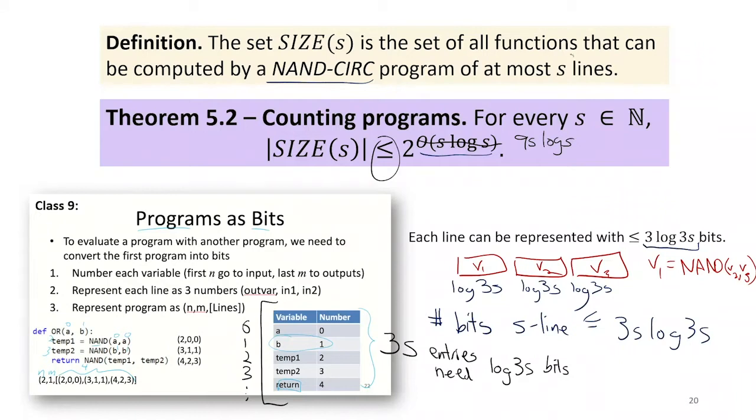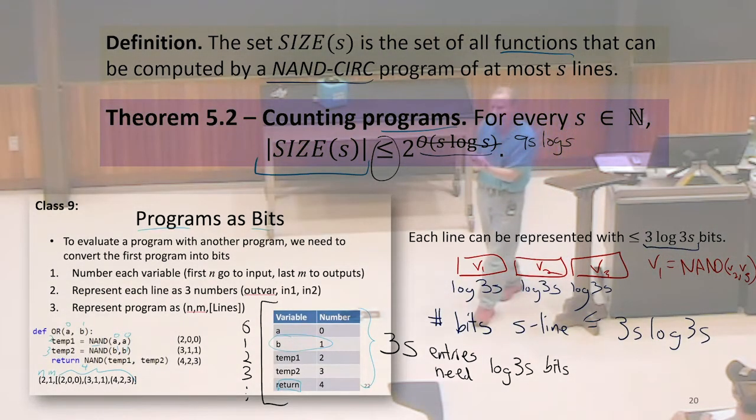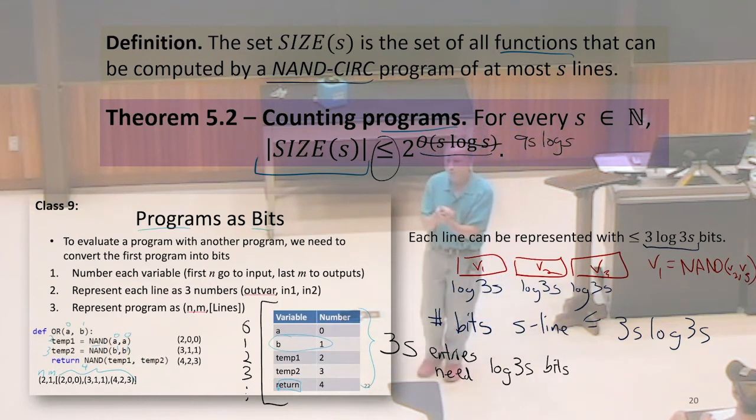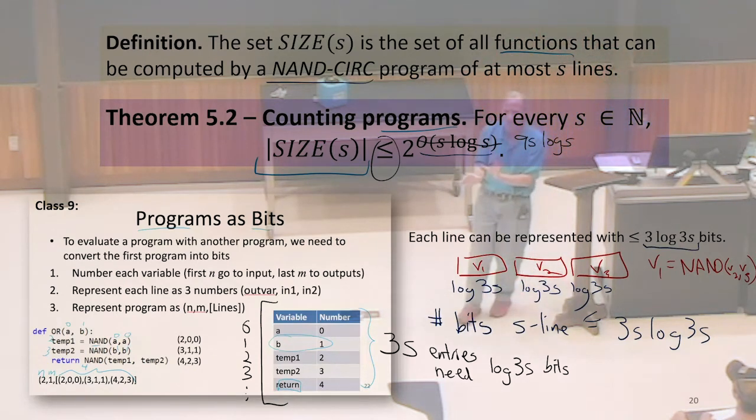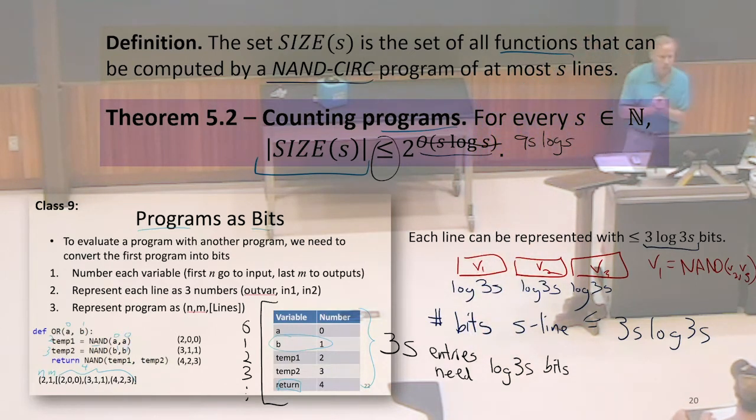So that's the number of programs. This is where we've got to be careful to distinguish programs. We've got functions and we've got programs. Size of S is the functions that can be computed by programs. So it's really counting the number of different programs. This is an upper bound because if we said it was an exact count, we would have to know each program corresponds to a different function, which they do not. Many of those programs, we might have two programs that have different bit representations that compute the same function. So we know there are no more than that number of functions that we can compute with S lines.